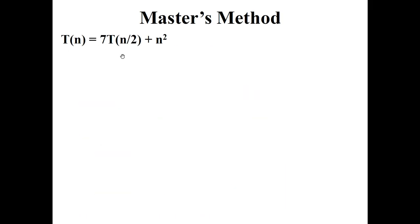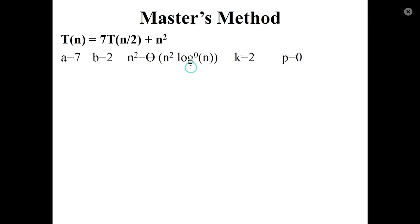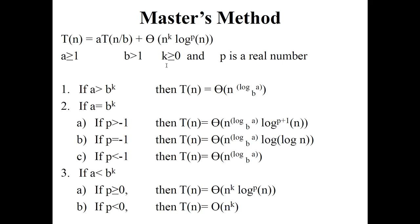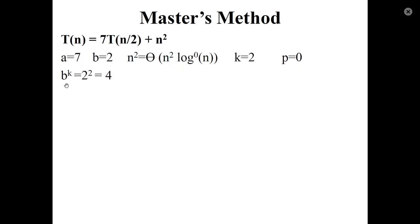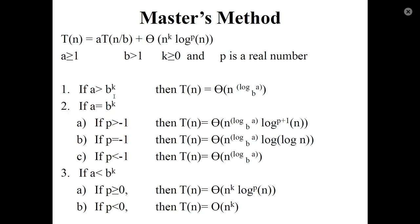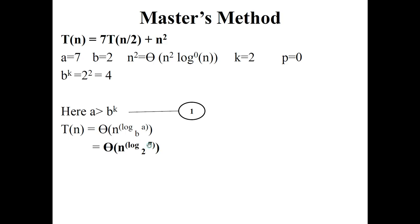The first question: T(n) = 7T(n/2) + n². Here a = 7, b = 2. Since n² = Θ(n² · log⁰(n)), we have k = 2 and p = 0. Find b^k: 2² = 4. Since a = 7 is greater than b^k = 4, this is Case 1. Therefore, T(n) = Θ(n^(log_2(7))).